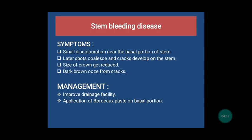The fourth disease is stem bleeding disease. The causal organism is Thielaviopsis paradoxa. Its symptoms are small discoloration near the basal portion of the stem; later the spots collapse and cracks develop on the stem, then the size of the crown gets reduced, and at last a dark brown fluid oozes out from the cracks. The remedial measures are improved drainage facility and apply Bordeaux paste on the basal portion of the stem.